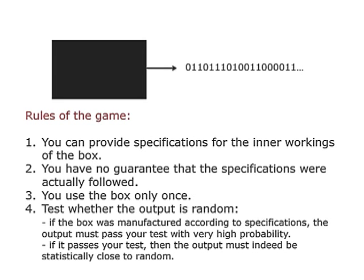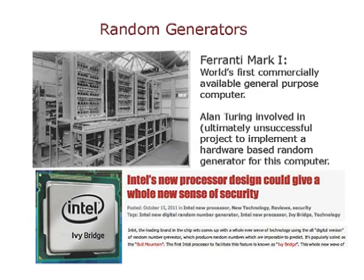This is a philosophical question, but if you want to look at random generators, they go back a long way. In the very first commercially available general purpose computer — I think this was back in 1951 — Alan Turing was involved in trying to build a physical random number generator for it and ultimately gave up. So this first computer did not have a random number generator. And Intel recently announced they have a new processor which will actually generate true random numbers, in a feature known as Ivy Bridge.